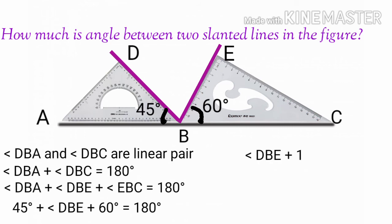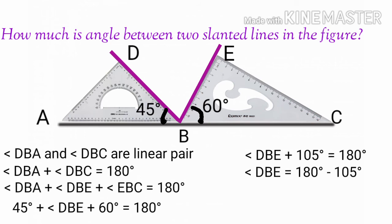Therefore, angle DBE plus 105 degrees is equal to 180 degrees. Therefore, angle DBE is equal to 180 degrees minus 105 degrees, which is equal to 75 degrees.